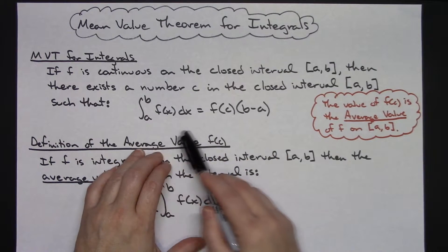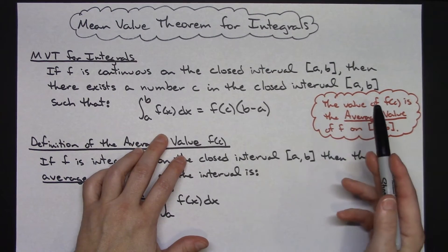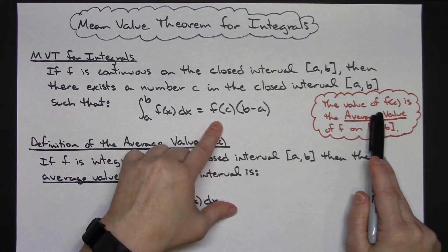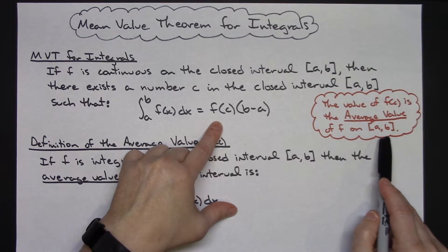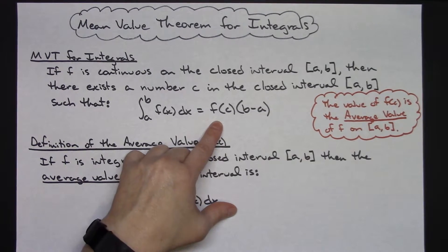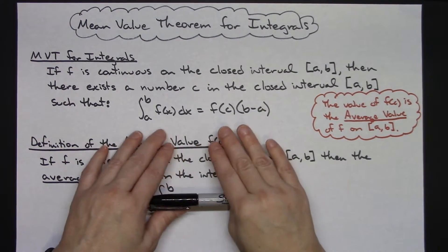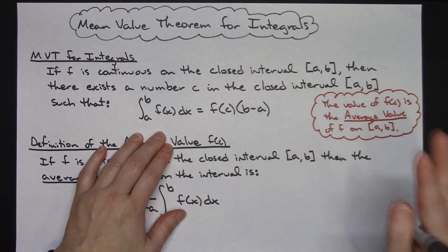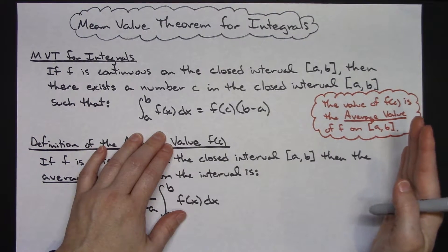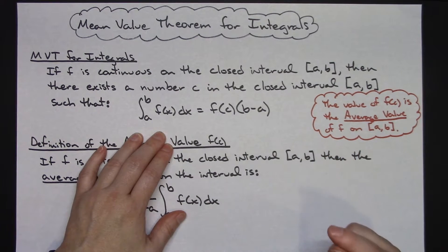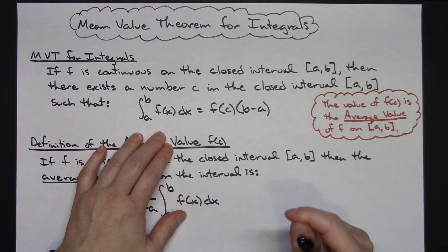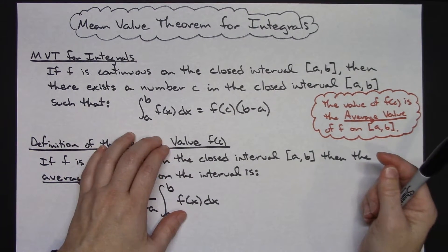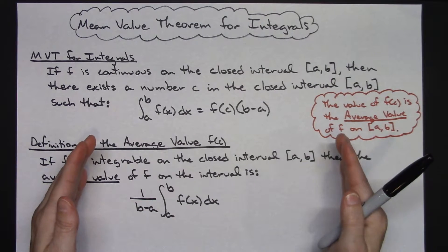Now in this theorem, for clarification purposes, this f(c) really is the average value of f on the interval from a to b. Basically, that theorem says that there is a rectangle whose area is precisely equal to the area of the region under the curve across the entire interval. It just lets us know that there is one.